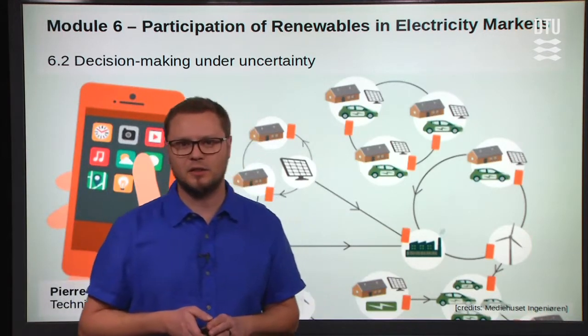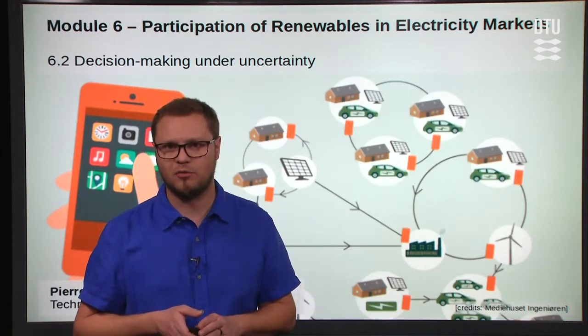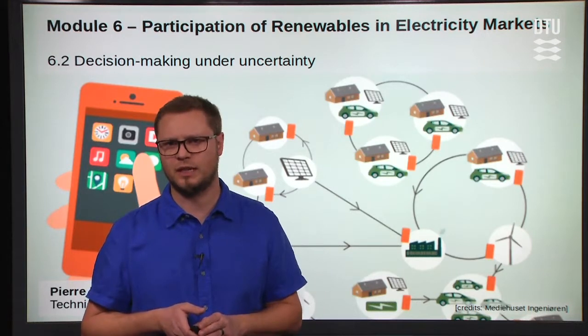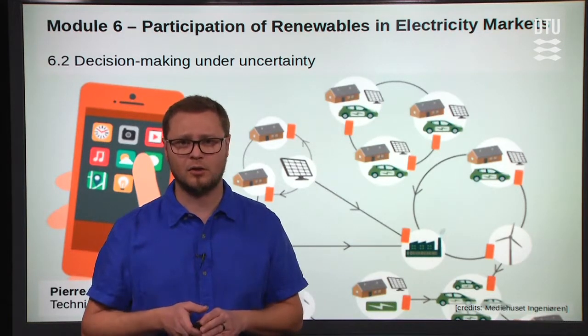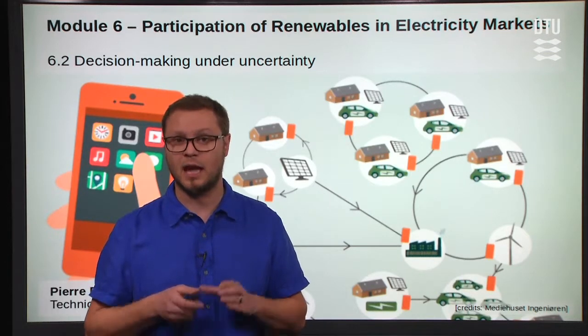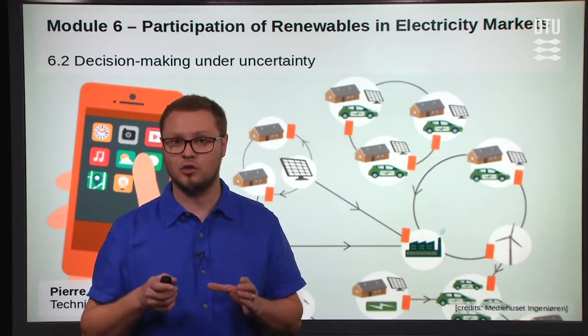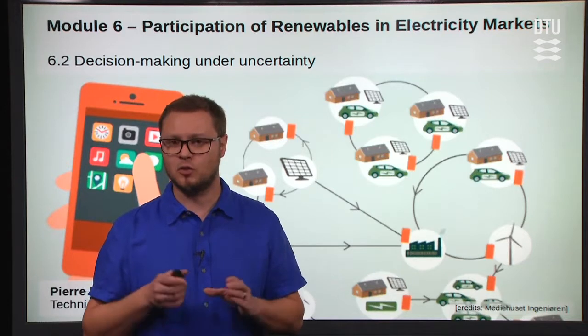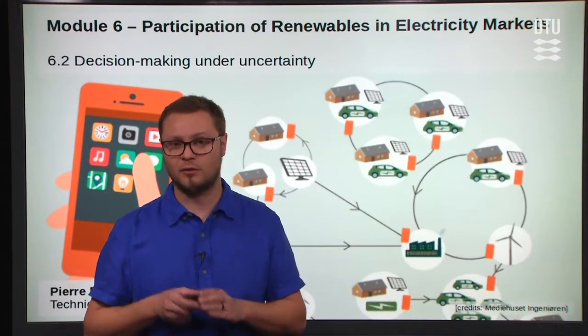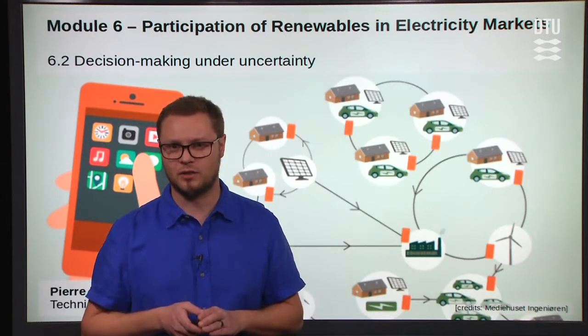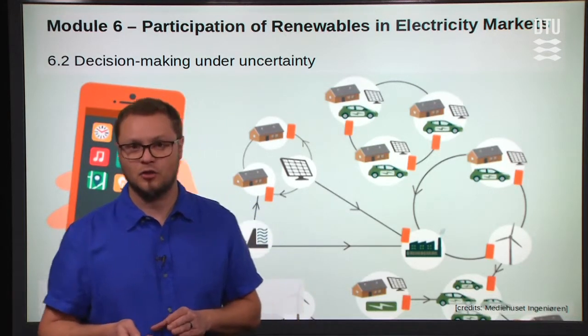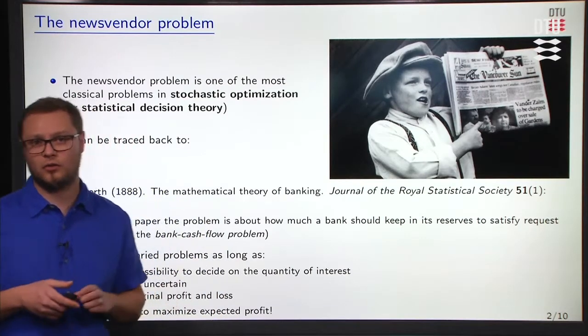Hi, let's now continue with the second block of Module 6, Participation of Renewables in Electricity Markets. In this second block, we'll be concentrating on decision-making under uncertainty, and more specifically, the newsvendor problem. This newsvendor problem is of relevance for the next block, where we'll be discussing offering renewable energy under uncertainty in electricity markets.